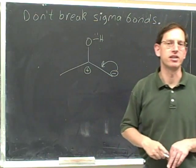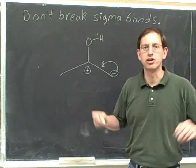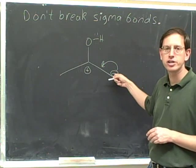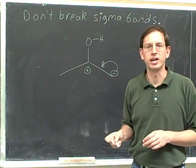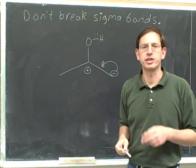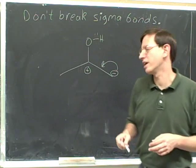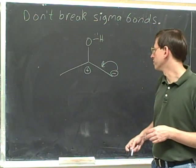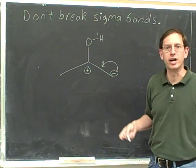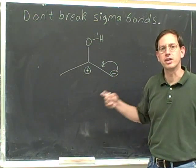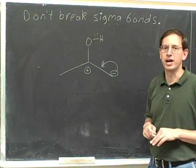So where can you put the tail of an arrow in resonance? You can put the tail on a lone pair, or on a negative charge that represents a lone pair, or on a double bond or a triple bond. The one thing you cannot do in resonance is put the tail of an arrow on a single bond, because that would involve breaking a single bond.